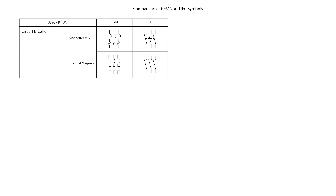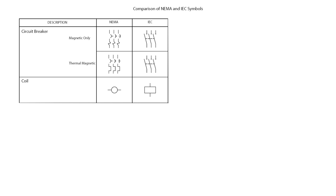Let's take a look at some symbols. We have put together tables that contain a comparison of the NEMA and IEC symbols. The purpose of this comparison is to provide a simple cross-reference of common symbols used through various parts of the world. The first set of symbols are circuit breakers — we show two types: the magnetic only and the thermal magnetic. To the right of the NEMA symbols you can see the IEC comparison. Next is the coil. For now, just focus on memorizing the names and how the symbols look. In later lessons, we will give examples on how these symbols are used in electrical diagrams and also cover how the symbols work.